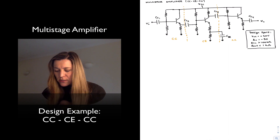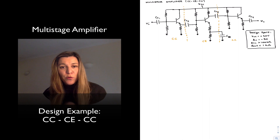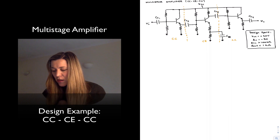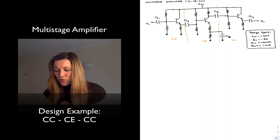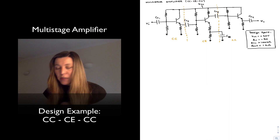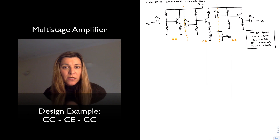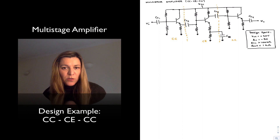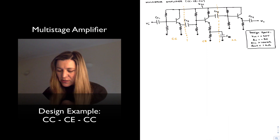Let's design an amplifier similar to the common emitter amplifier we designed with a gain of negative 50, but with the following specifications: Rin greater than 100 kilohms and Rout less than 1 kilohm. For the gain of negative 50, we can set up the same resistance values we used for our common emitter amplifier stage previously.